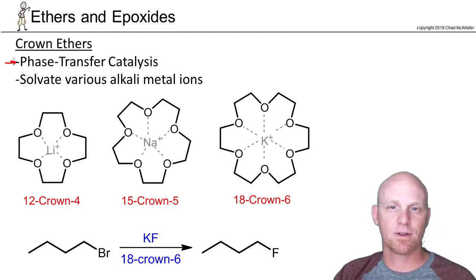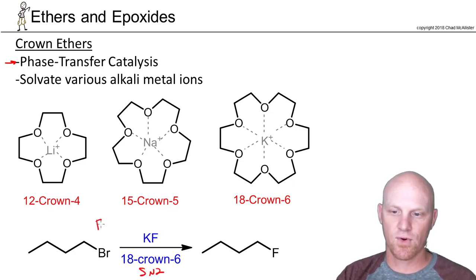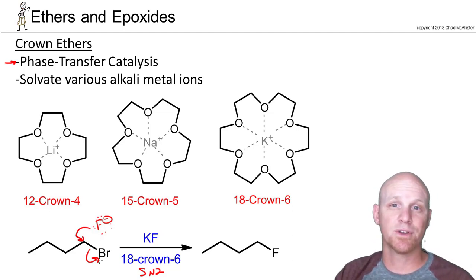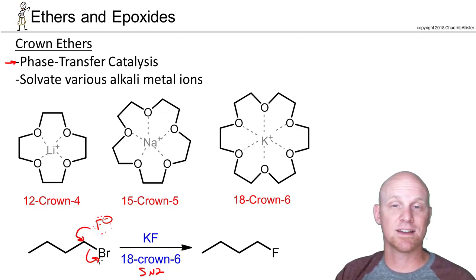If I want to do a reaction like the one at the bottom here — this SN2 reaction — I need fluoride to come and do backside attack and kick off the bromine. The problem is that potassium fluoride is not very soluble in most organic solvents. If I try to do this reaction in benzene, it's really not going to happen. Potassium fluoride is not going to dissociate to any significant extent, and the reaction is just not going to go.